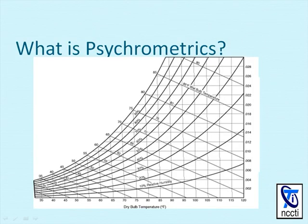So what is psychometrics? Psychometrics is the study of moist air. This chart was developed by Willis Carrier in 1904.